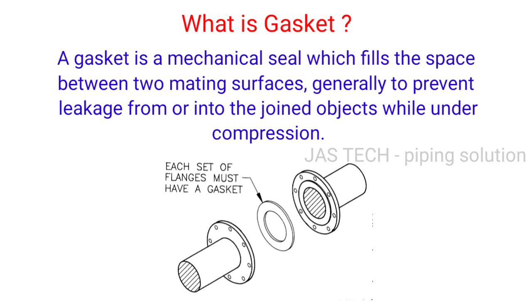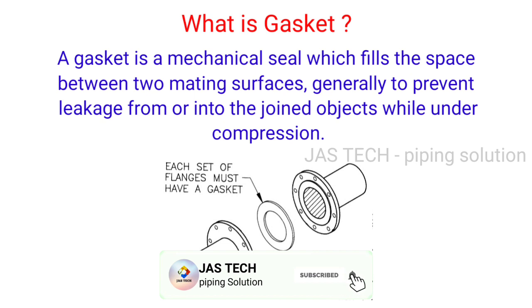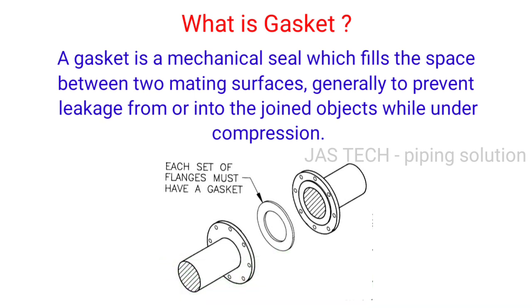What is a Gasket? A gasket is a mechanical seal which fills the space between two mating surfaces, generally to prevent leakage from or into the joint while under compression.